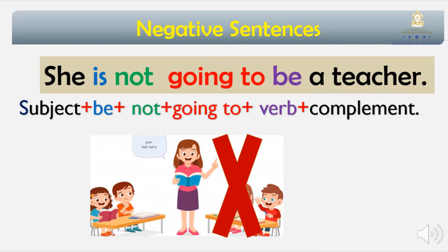What do you need in order to make a negative sentence? I have an example: She is not going to be a teacher. You are going to need a subject — she. Verb to be — is. Then not. Going to. Verb — to be. And then the complement — a teacher. This is the complement and the last part of the sentence. She is not going to be a teacher. This is the negative example.